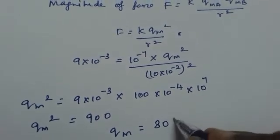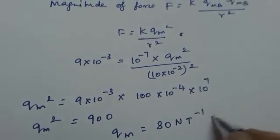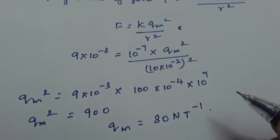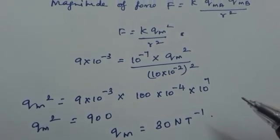What is the unit here? The unit here is Newton per Tesla. QM = 30 Newton per Tesla.